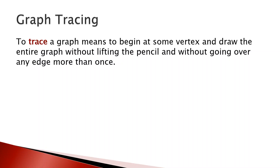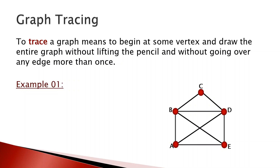To trace a graph means we start at some vertex and draw the entire graph without lifting the pencil and without going over any edge more than once. For example, let's look at this graph in the shape of an envelope. Note that edges AD and BE are intersecting but do not form a vertex.